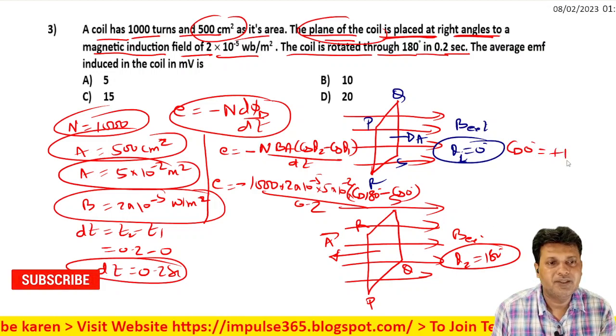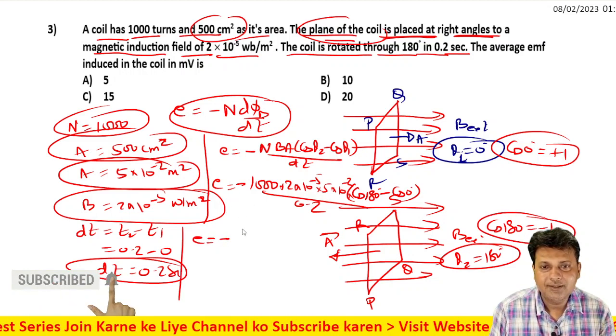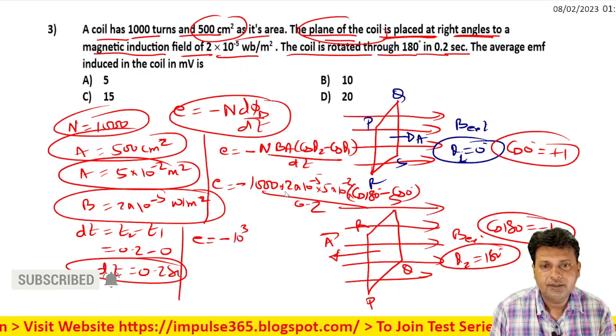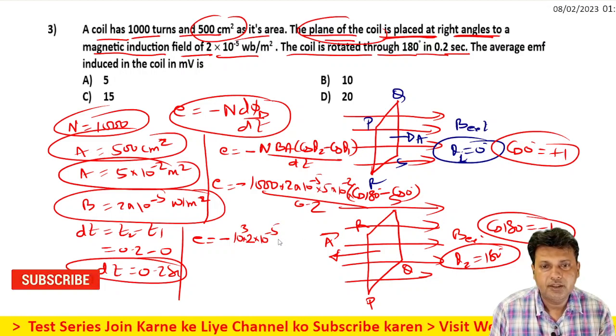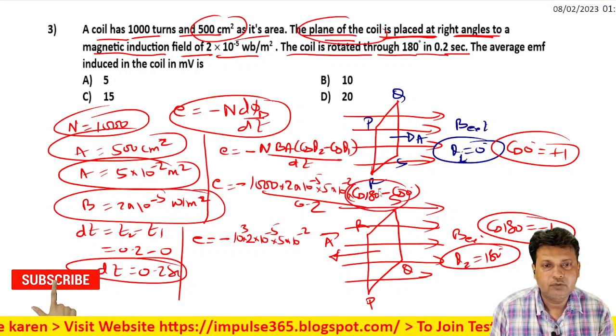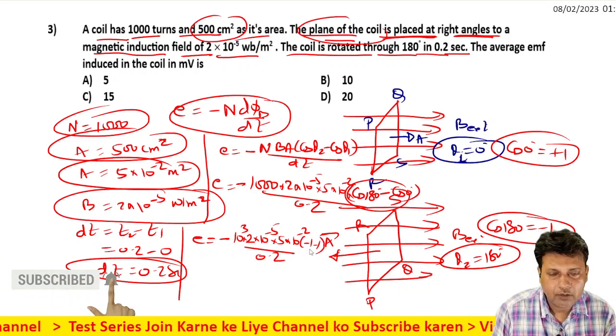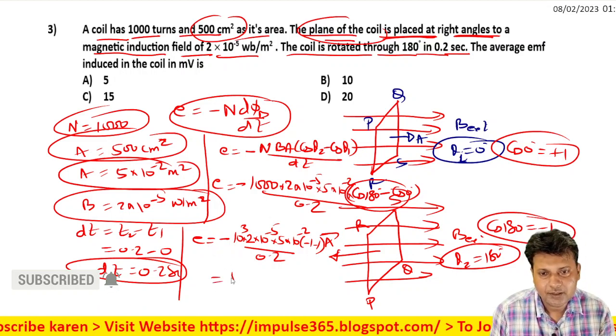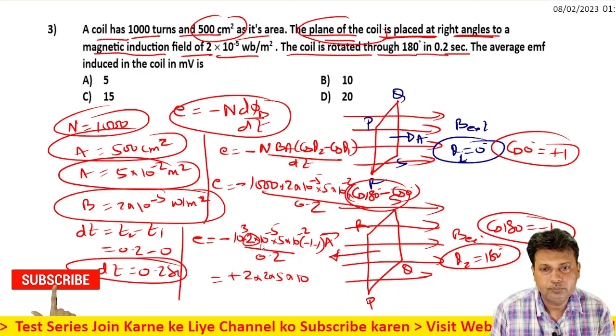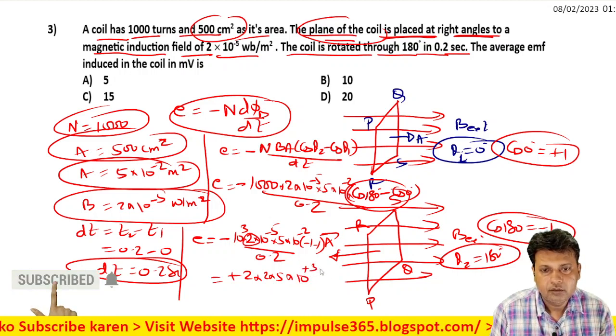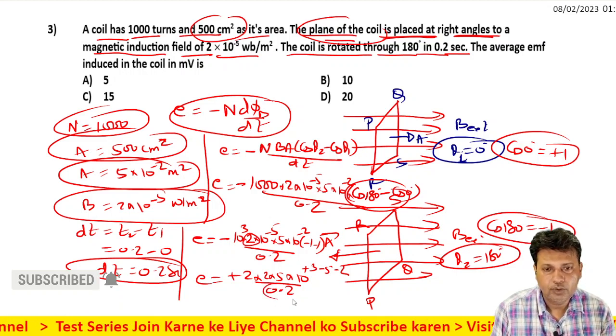cos 180 degree value is minus 1, cos 0 degree value is plus 1. So you have minus 1 minus 1, which is minus 2. The minus signs cancel out, giving you 2×10³ × 2×10⁻⁵ × 5×10⁻² × 2 divided by 0.2, which equals 2×2×5×10⁻⁴ divided by 2×10⁻¹.